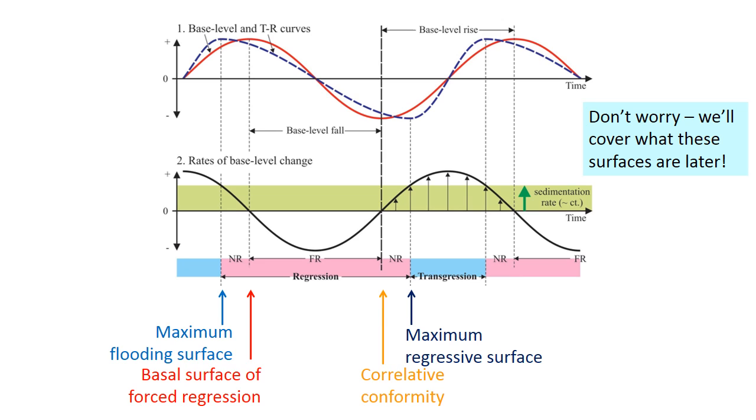The beginning and the end of forced regression, at least in offshore marine settings, can be bounded by surfaces called the basal surface of forced regression and the correlative conformity. These two surfaces are difficult or even impossible to identify in outcrop, so we're not really going to deal with them at all.